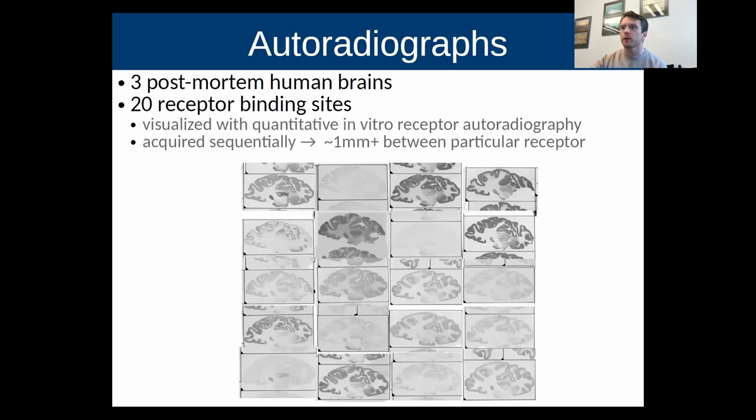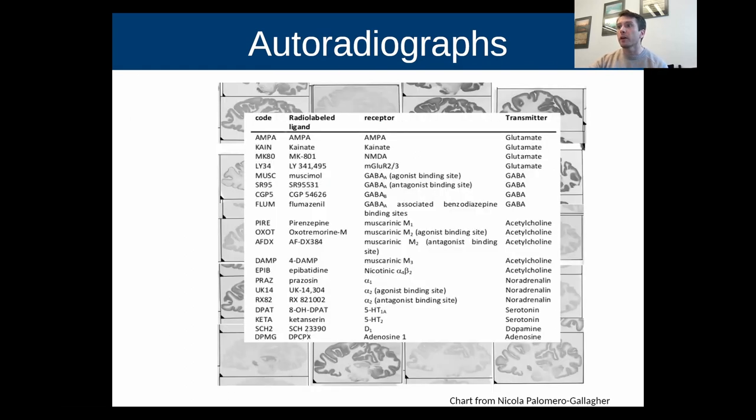For those of you who haven't seen this before, this is what the autoradiographs look like to give you a general idea. There's 20 different types, and they cover the main neurotransmitter receptor families, including glutamate, GABA, and so forth.